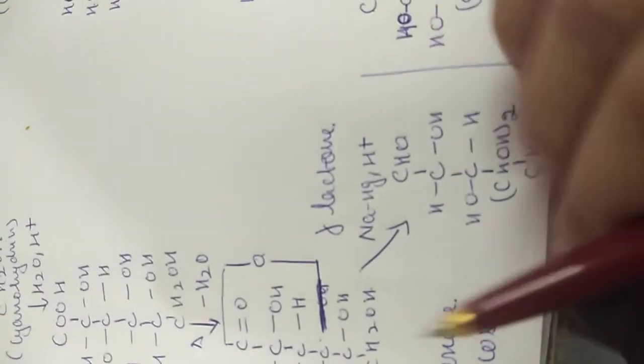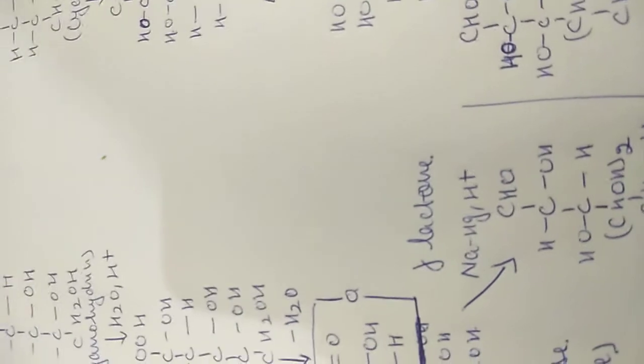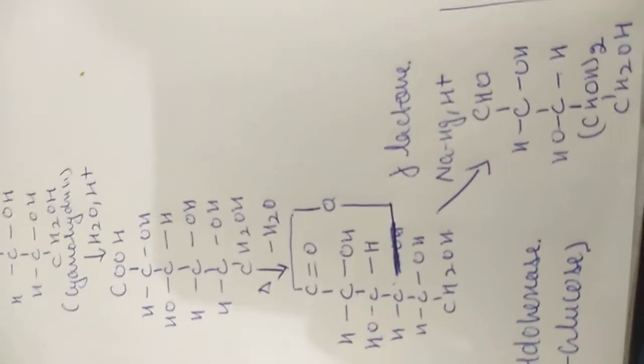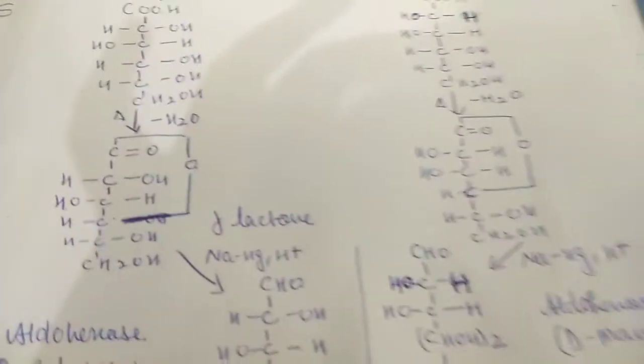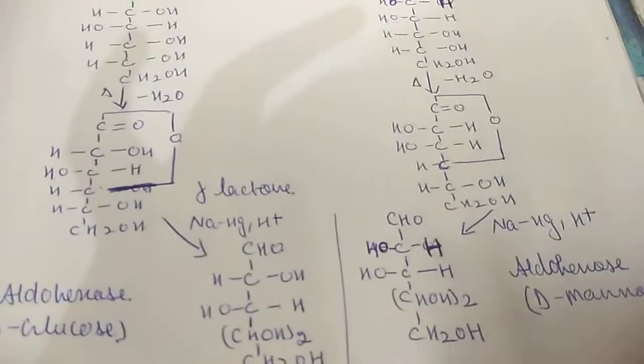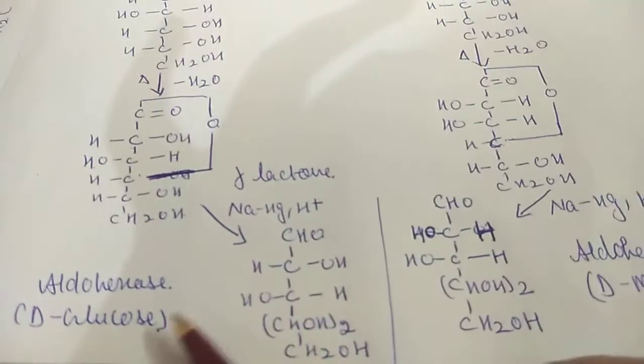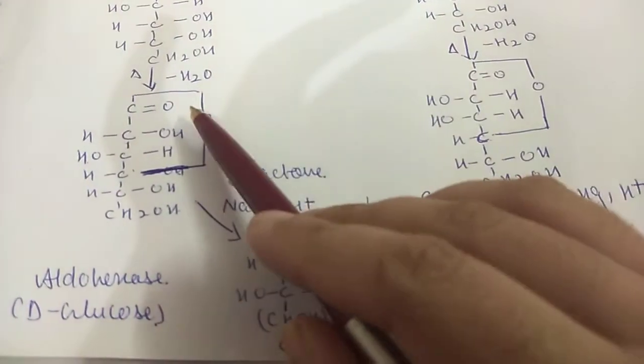Further, there will be reduction with sodium amalgam — Na(Hg) — on both sides. The lactone ring undergoes reduction with sodium amalgam.